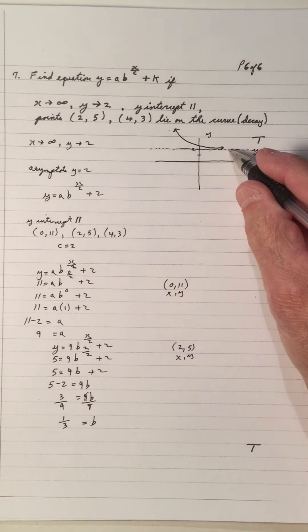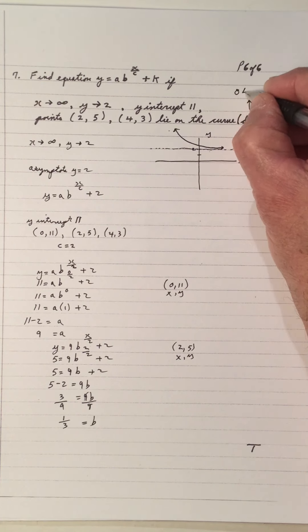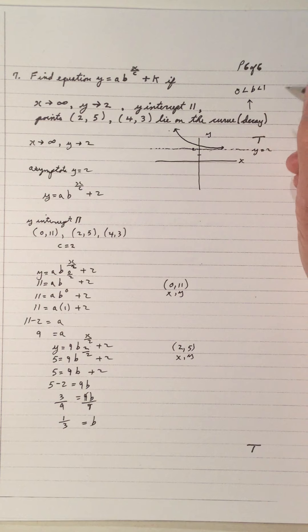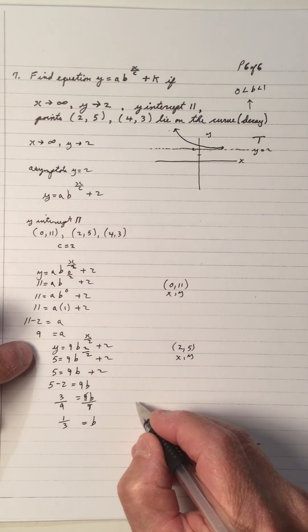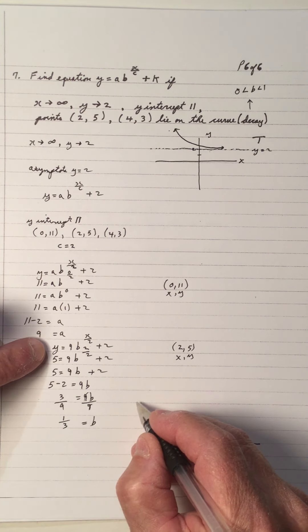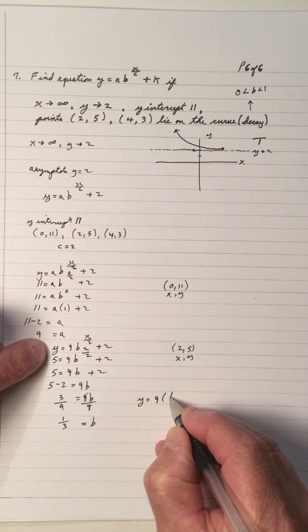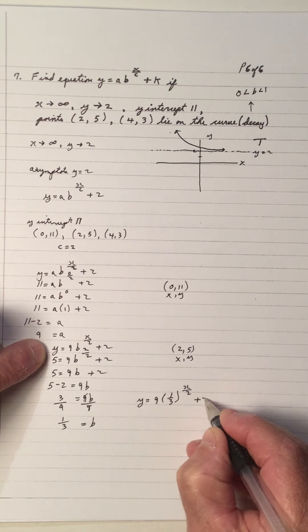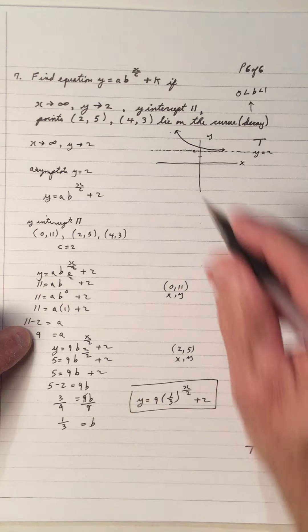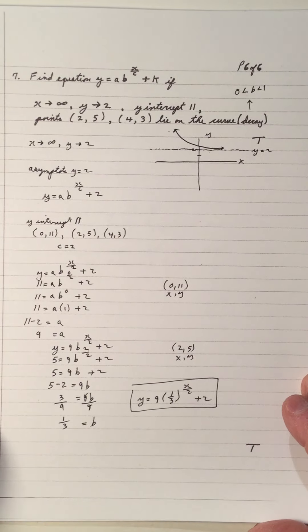The base 1/3 confirms this is a decay curve, since 0 < 1/3 < 1. A decay curve has a base between 0 and 1, while a growth curve has a base greater than 1. So the final equation is Y = 9·(1/3)^(x/2) + 2. Give yourself a mark if you have that equation correctly.